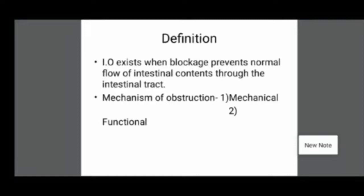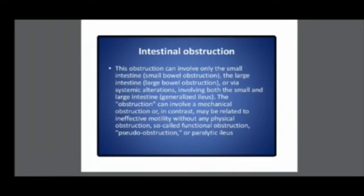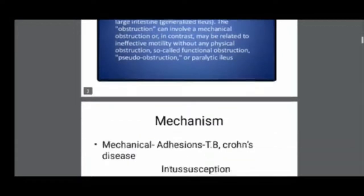There are two mechanisms by which obstruction occurs. One is a mechanical cause of obstruction and the second is a functional cause of obstruction. Intestinal obstruction can involve only the small intestine or large intestine, or it can occur via systemic alterations involving both, which is called generalized ileus. In contrast, functional obstruction related to ineffective motility without any physical obstruction is called paralytic ileus.